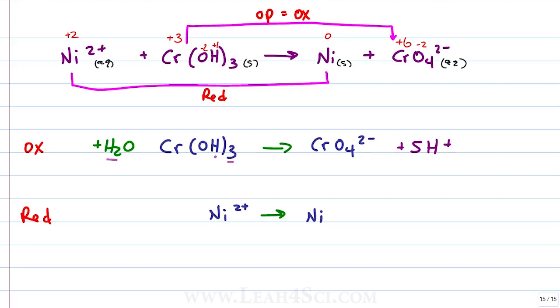Let's check our atoms: 2 hydrogens and 3 hydrogens is 5, 5 hydrogens, 1 chromium on each side, 1 oxygen and 3 oxygens gives me 4, 4 oxygens, our atoms are balanced.